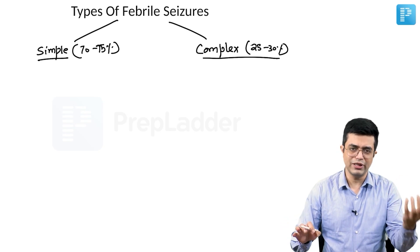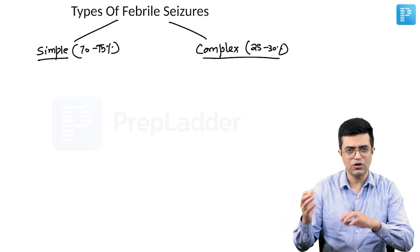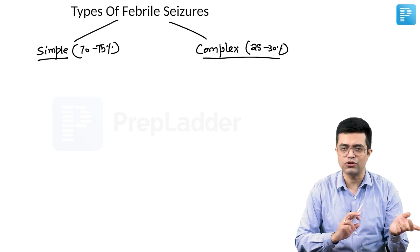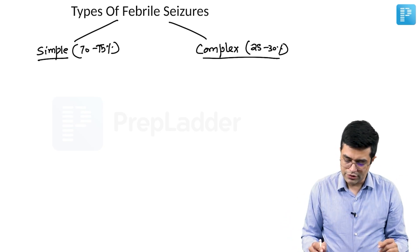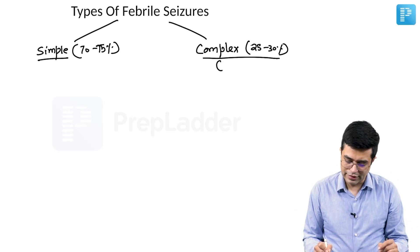In a single child it is usually either simple or complex, not a mix of the two. Complex febrile seizures in certain textbooks are also mentioned as atypical febrile seizures.